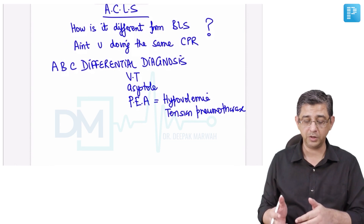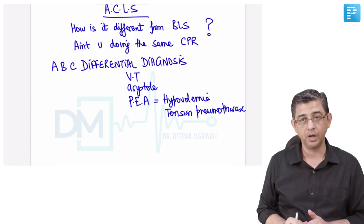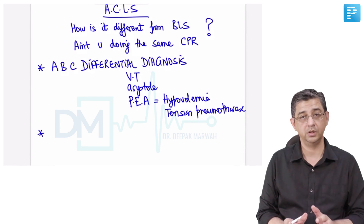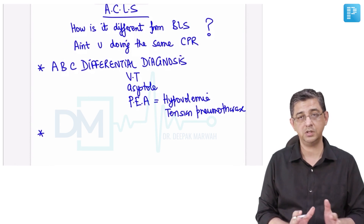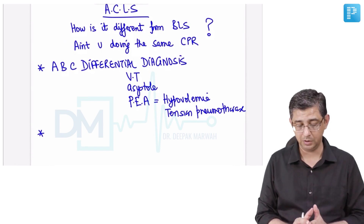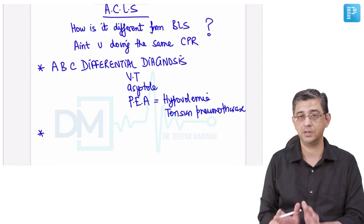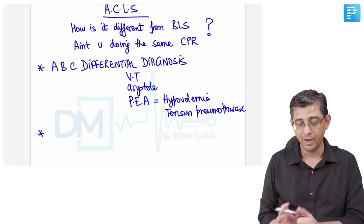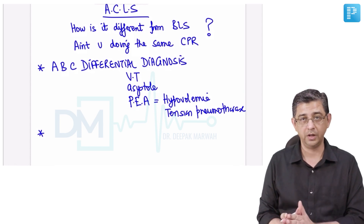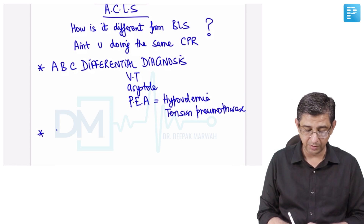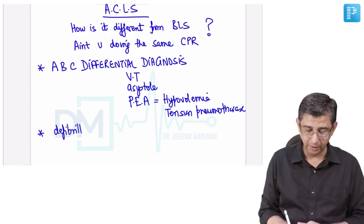In advanced cardiac life support, you make a differential diagnosis and then treat the patient accordingly. In basic life support, your objective is just to maintain brain perfusion by giving chest compressions. But in ACLS, you are trying to do something beyond routine chest compressions — to identify the cause and treat it.